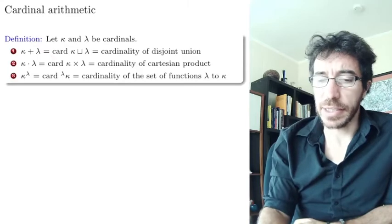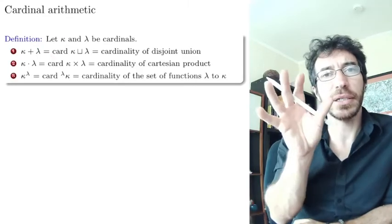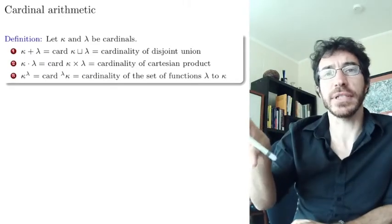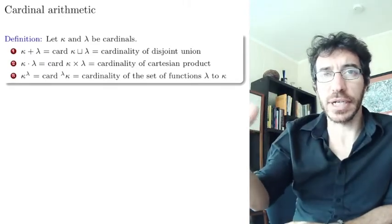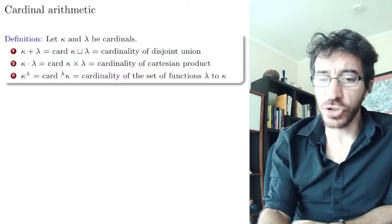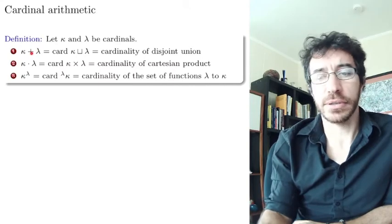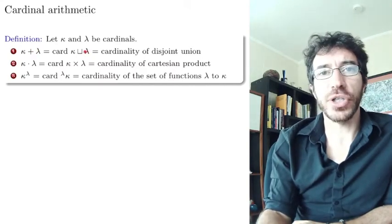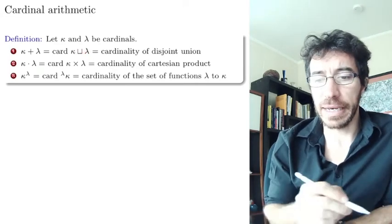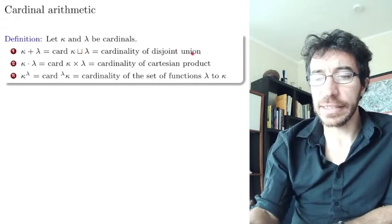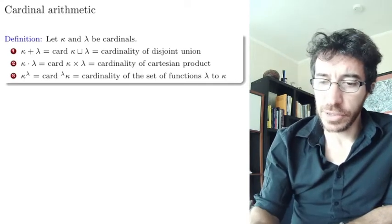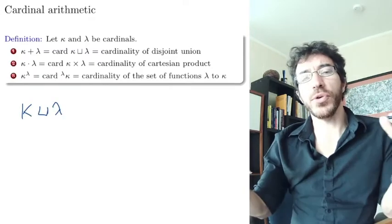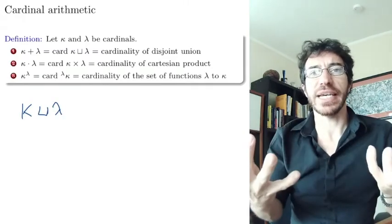So let kappa and lambda be cardinals. That means they are sets which have a certain size, and they are the particular representatives of these sets that we call cardinals. The addition of these two cardinals is going to be the cardinality of the disjoint union of kappa and lambda.